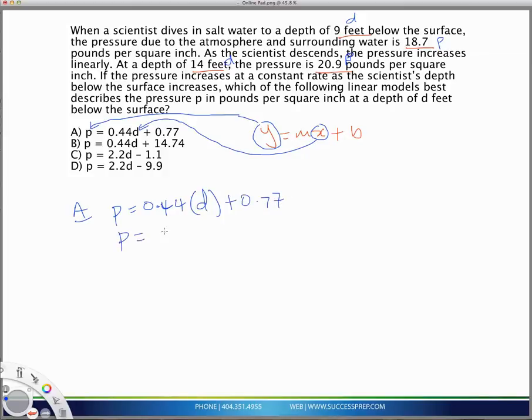So, the p is equal to 0.44, and the d that I'm plugging in is 9. Again, I'm getting that d from my equation, and this is equal to 0.77.